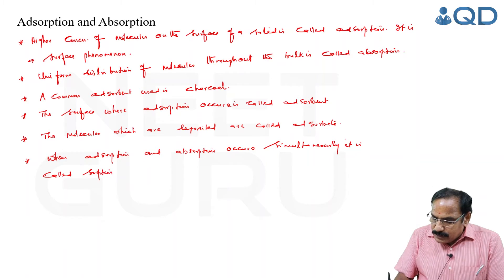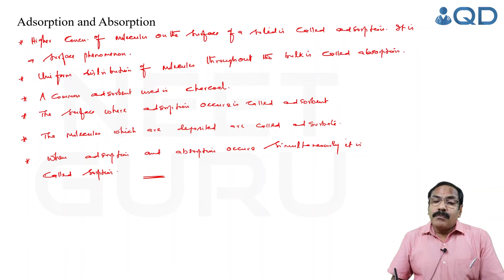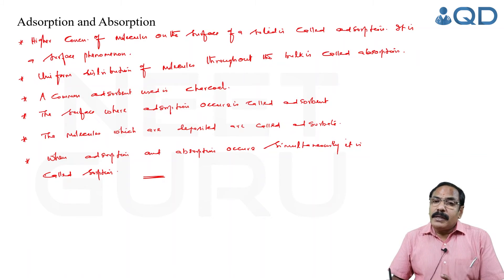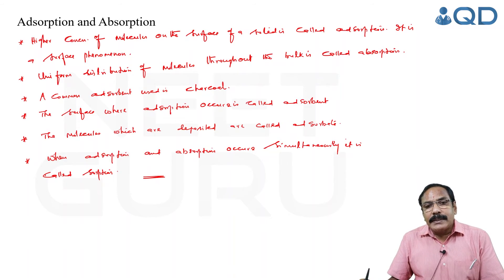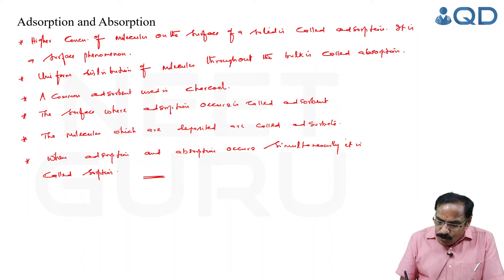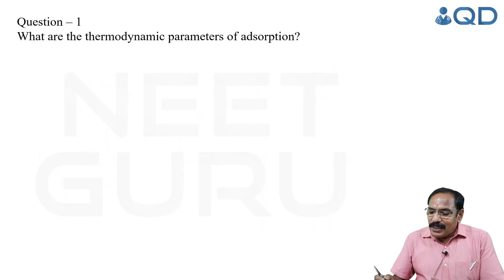Based on the strength of the attractive force between the adsorbent and adsorbate, you have chemical adsorption or chemisorption, and physical adsorption or physisorption. Now let us do a small problem based on adsorption — what are the thermodynamic parameters of adsorption?